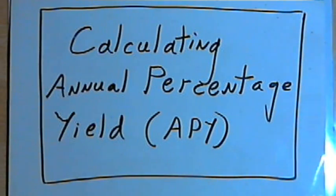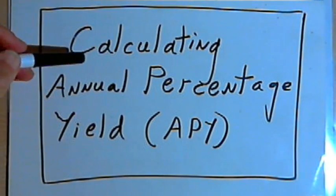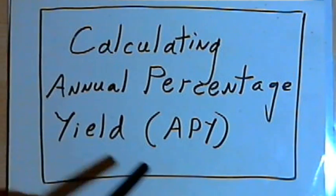This video is provided as supplementary material for courses taught at Howard Community College, and in this video I'm going to show how to calculate annual percentage yield, or APY.